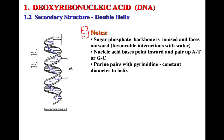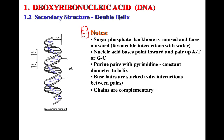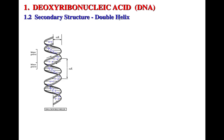The sugar-phosphate backbone is ionized because the phosphate groups are negatively charged and face outward, while the nucleic acid bases point inward. Hydrogen bonding pairing occurs between A and T, and G and C — purine pairs with pyrimidine — which allows for a constant diameter helix. These base pairs also have pi systems that can be stacked via van der Waals interactions. The chains are complementary: if you have one chain you can deduce the other, since G is always paired with C and A is always paired with T.